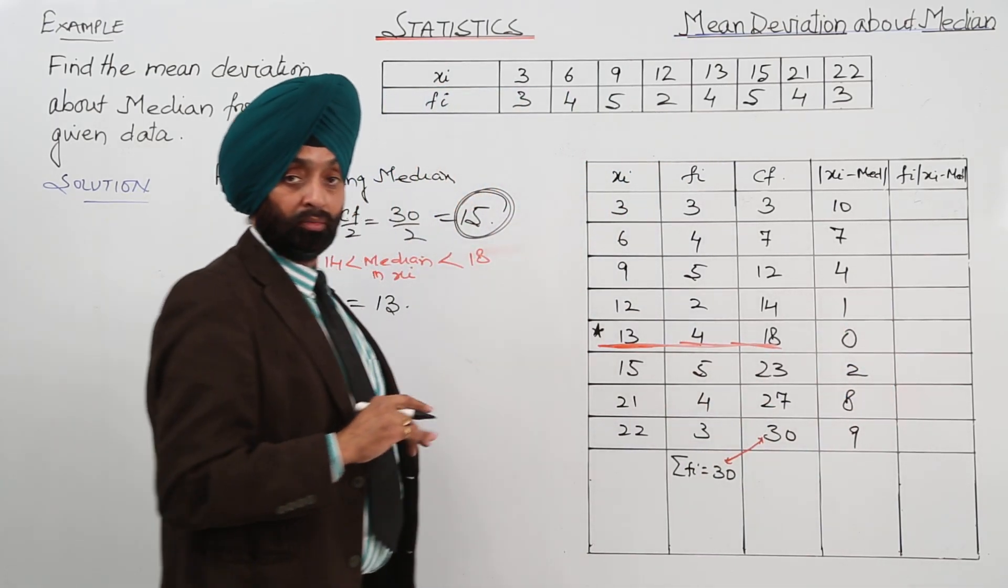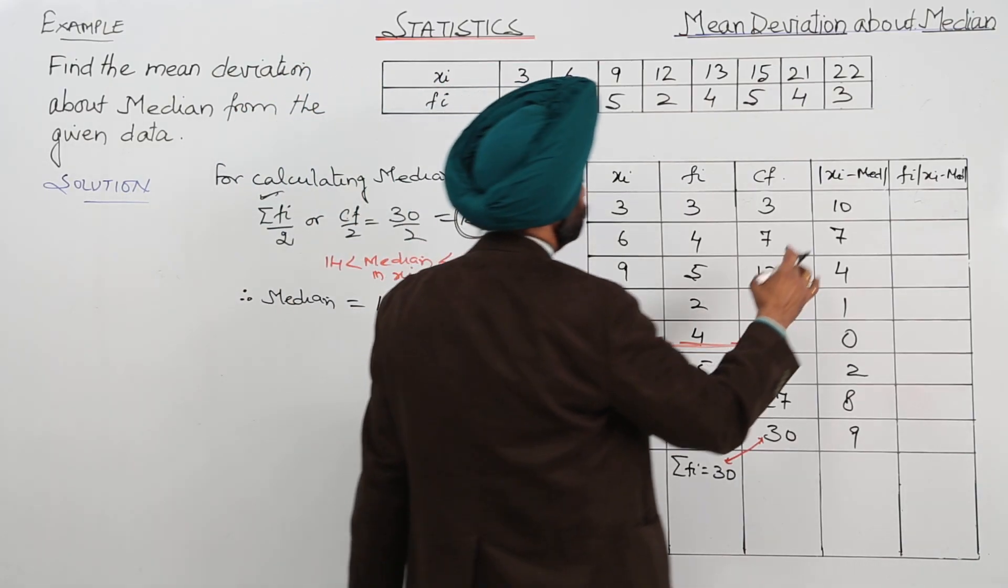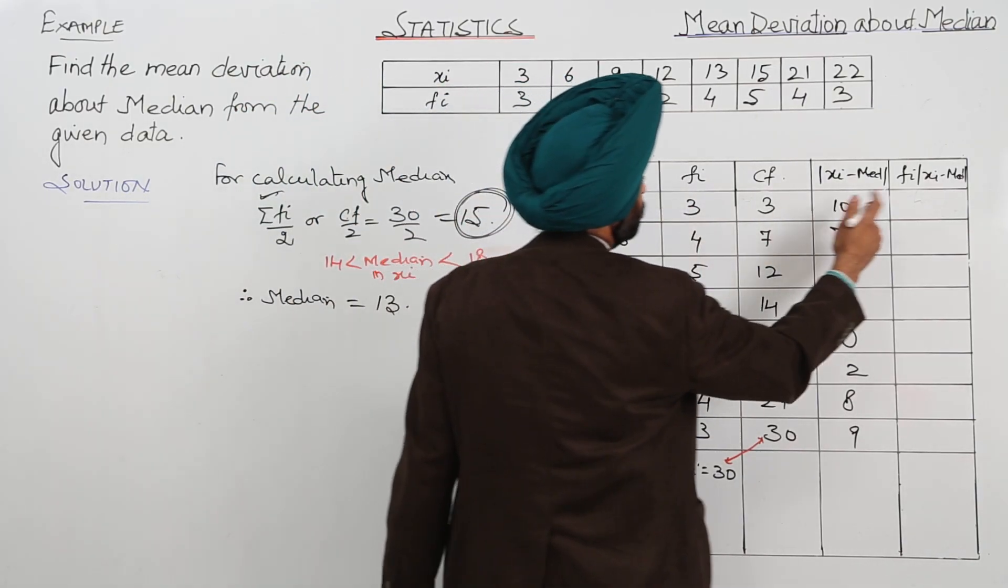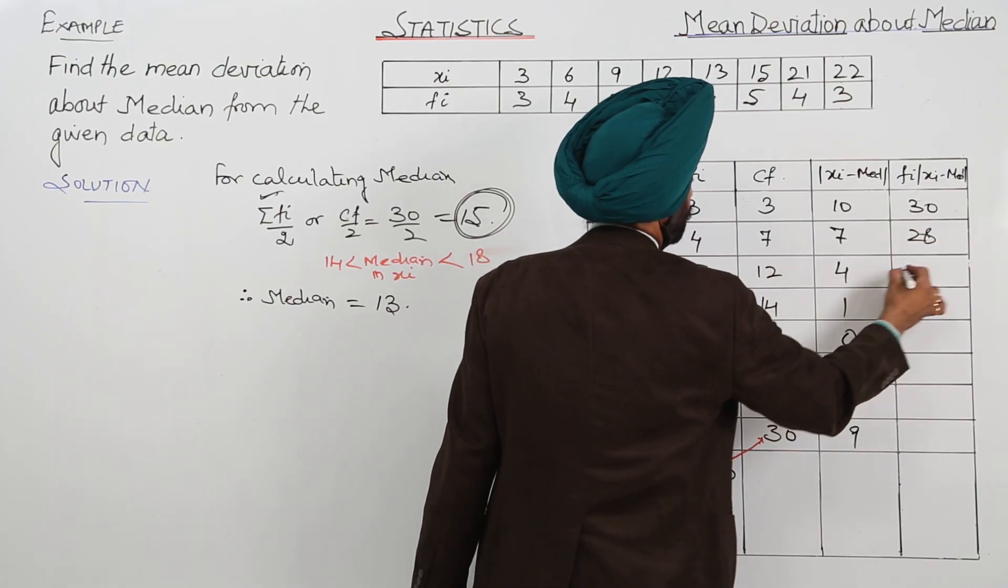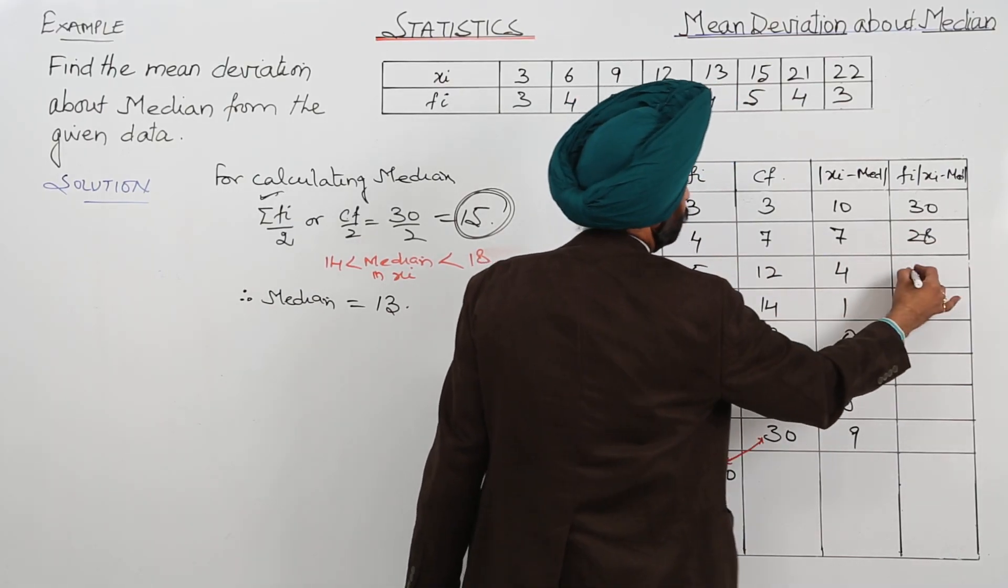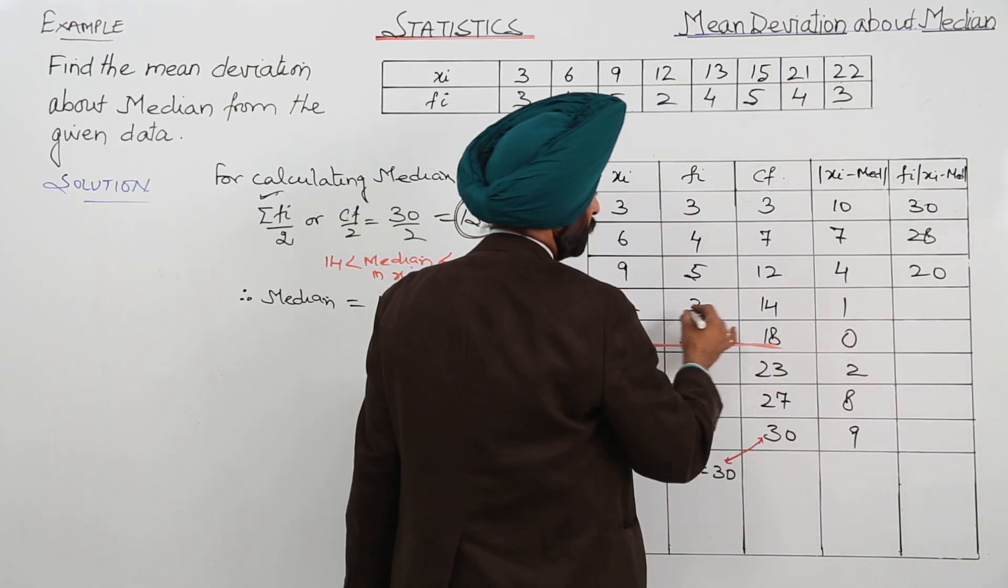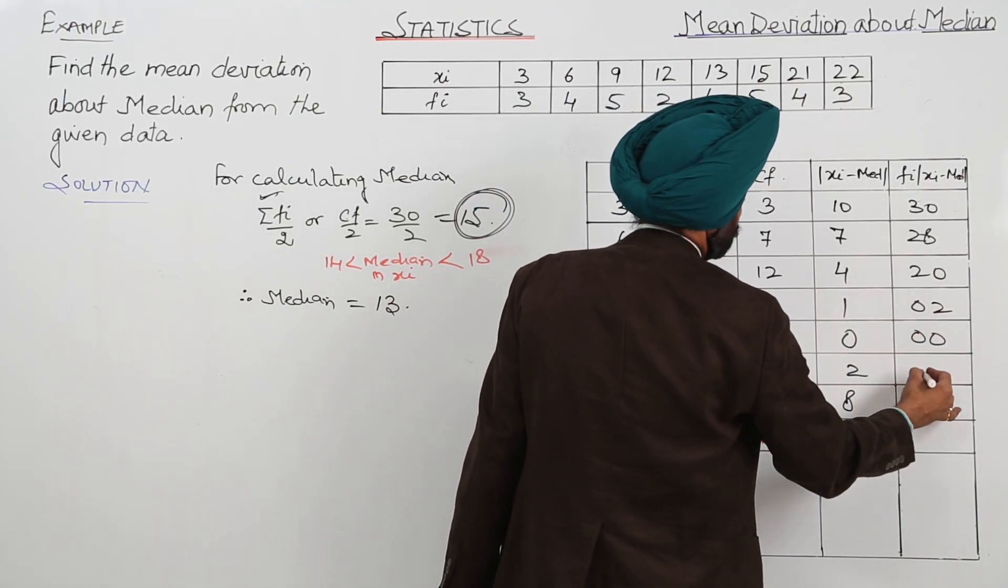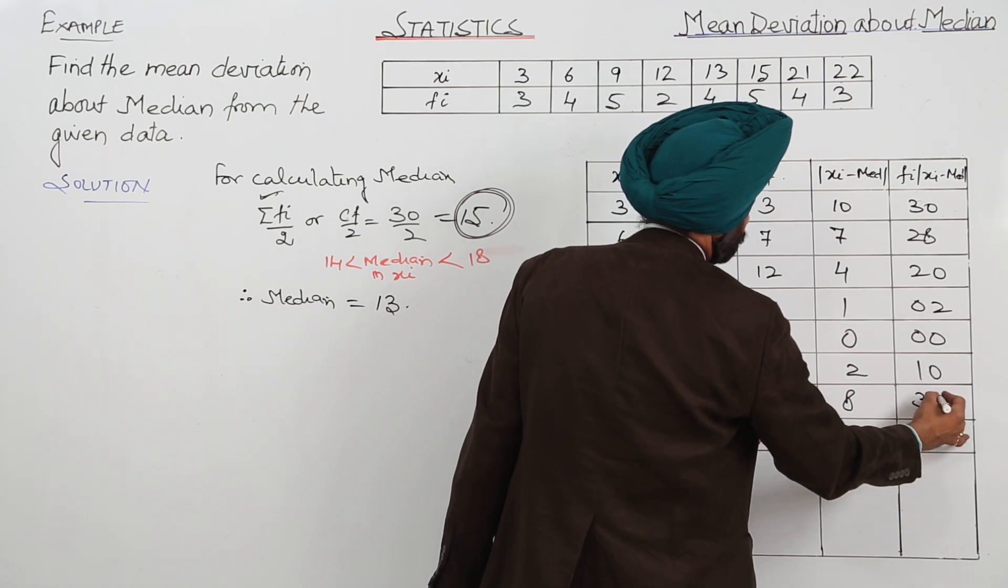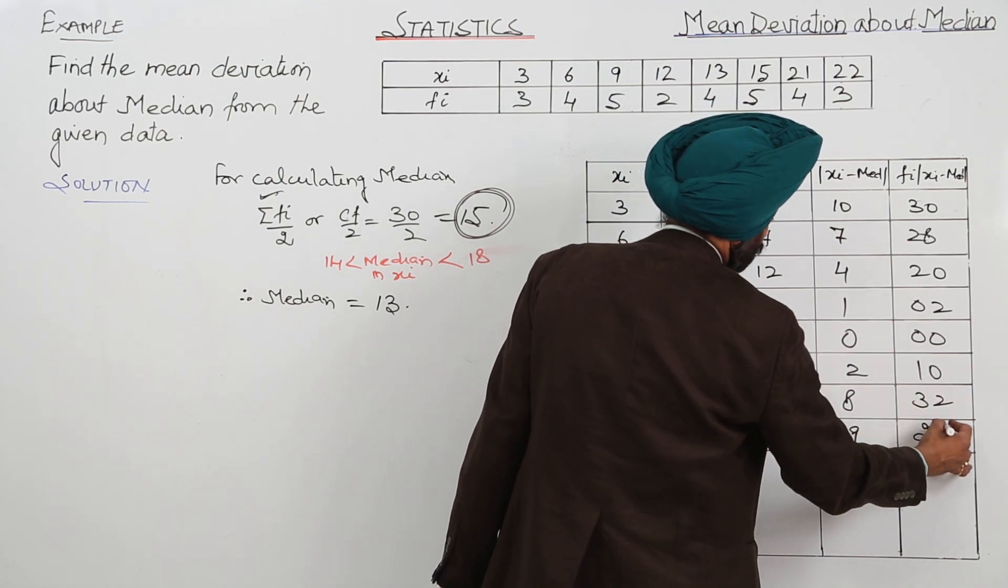Now, Fi multiplied by the Xi minus median. Now, Fi this one. 3 with 10, 30, 28, 5 with 4, 20, 2 with 1, 2, double 0, 0, 10, 32, 27.